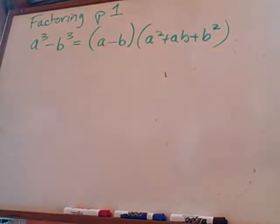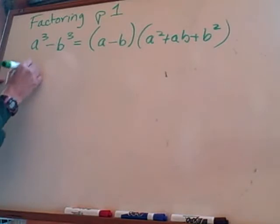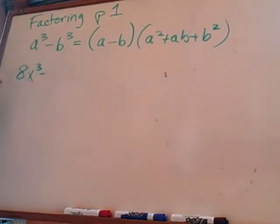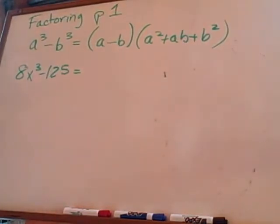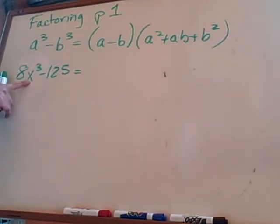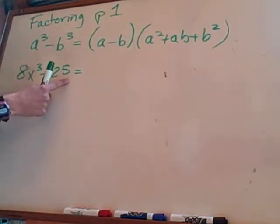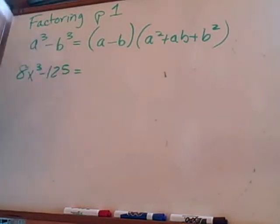So if we look down at that first example where it has 8x cubed minus 125, the first thing you want to recognize is, is this a perfect cube? Well, 8 is because 2 times 2 times 2 is 8, and x is because x times x times x is x cubed. So that's a perfect cube. Is 125 a perfect cube? Yes, 5 times 5 times 5.